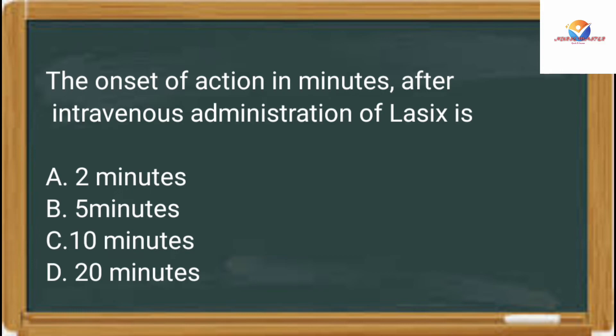Lasix is a loop diuretic used to treat hypertension and edema in congestive heart failure, liver cirrhosis, and renal failure. Generic name is furosemide. Lasix works to increase the excretion of sodium and water by the kidney by inhibiting their reabsorption from the proximal tubule, distal tubule, and loop of Henle. The onset of action after IV administration is 5 minutes and duration lasts up to 2 hours.